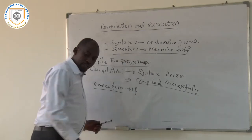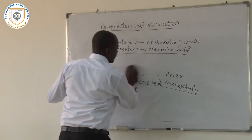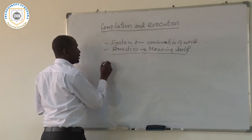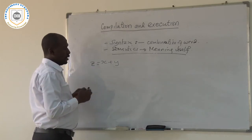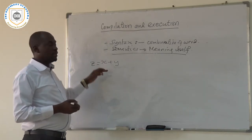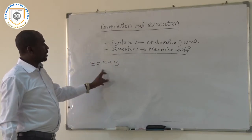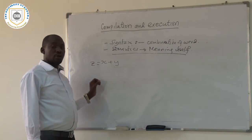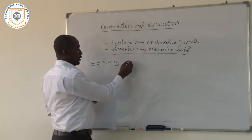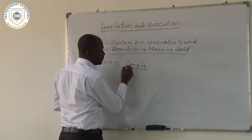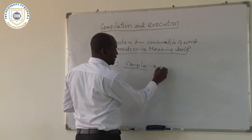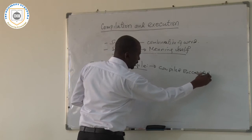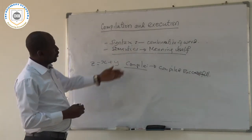For example, I was writing a program for adding two numbers, x and y, which gives z. That was my program — I need to add two numbers: I put the first number, I put the second number, and when I add them it gives me z, which is the summation of those two numbers. After writing this program, when I compile it, it may give me that the program compiled successfully, which means there is no syntactical error.